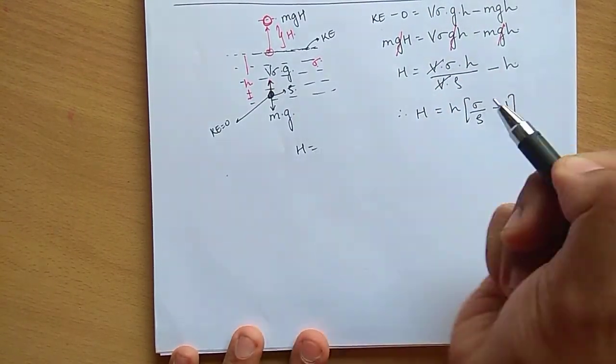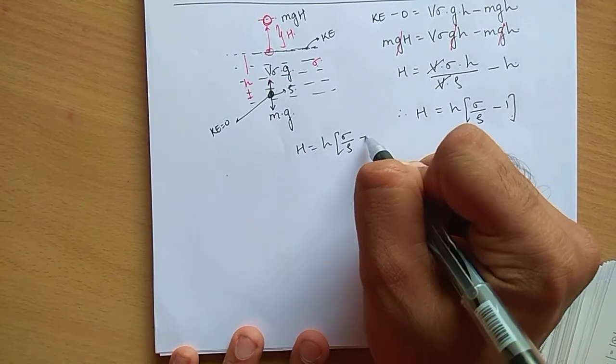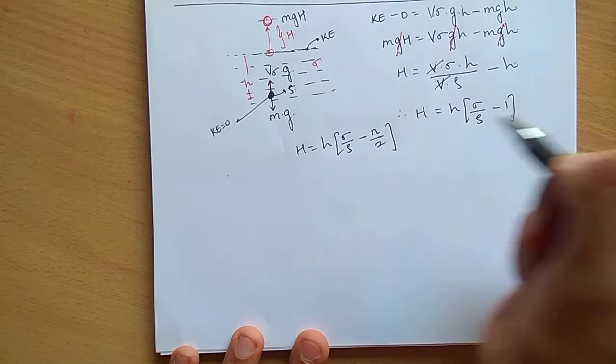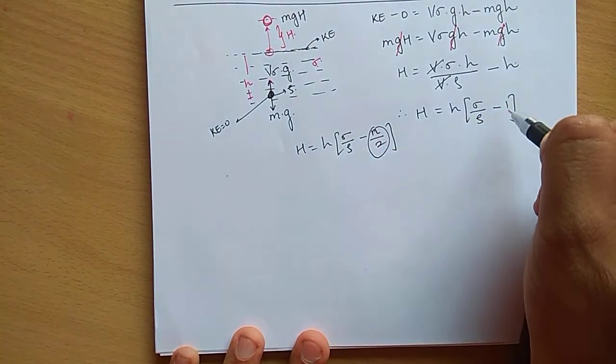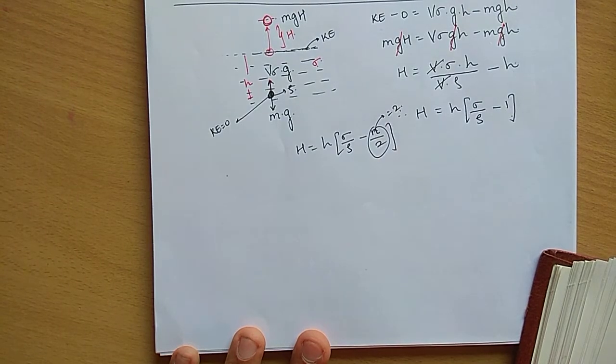Inho ne aapko is form mein diya hua hai. They have given to you that h' is equal to h into (sigma by rho minus n by 2). Aapko pata na yeh term 1 honi chahiye, so therefore n has to be equal to 2. N should be equal to 2.